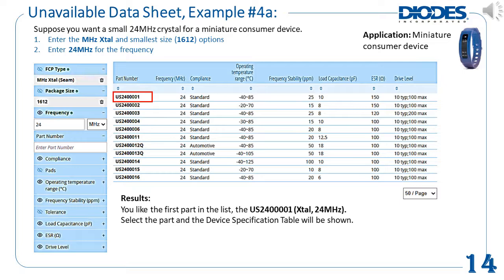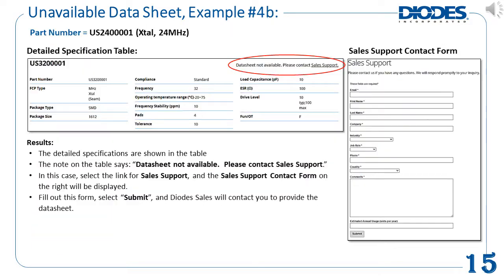Suppose you want a small 24 MHz crystal for a miniature consumer device. You enter the smallest size, 1612, and you like the US240001. Select the part and the device specification table will be shown. However, where the datasheet link normally is, there is a note saying 'Datasheet not available. Please contact sales support.' Select the sales support link and the sales support contact form will be shown. Fill in and submit this form and Diodes Sales will be able to provide you the datasheet.